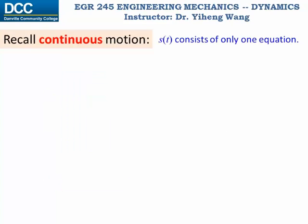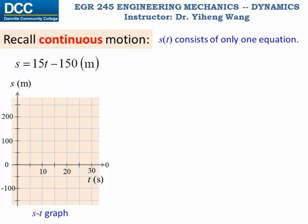For continuous motion, the position function consists of only one equation — for example, s equals 15 times t minus 150, where t is in seconds and s is in meters. Based on this equation, we can graph the relation between s and t, and this is the s-t graph.